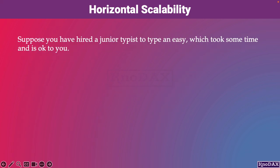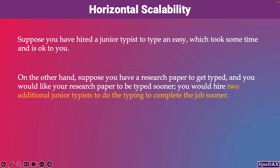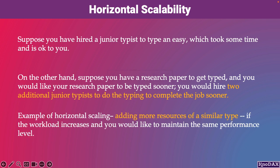Let's understand horizontal scalability from the previous example. Suppose you have hired a junior typist to type an essay, which took some time and that is okay to you. Now suppose you have a research paper to get typed and you would like it typed sooner. You would hire two additional junior typists to complete the job sooner. This is an example of horizontal scaling — adding more resources of a similar type when the workload increases and you would like to maintain the same performance level.